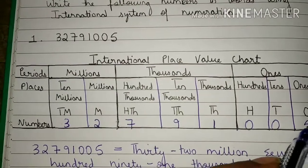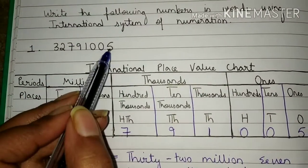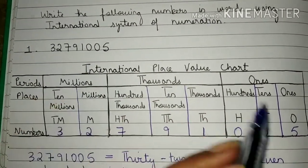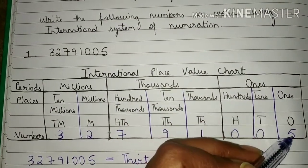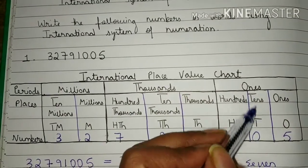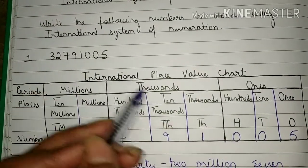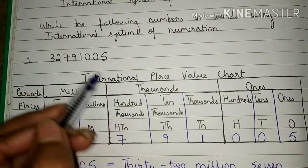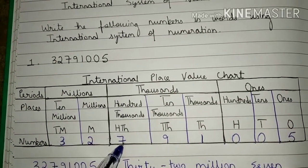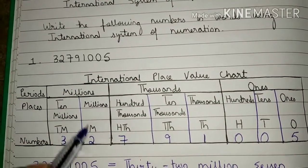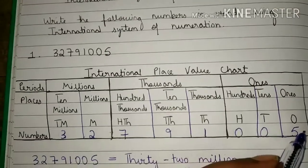Now you will write the number 32,791,005 into the international place value chart. Five is in ones place. Zero is in tens place. Zero is in hundreds place. One is in thousands place. Nine is in ten thousands place. Seven is in hundred thousands place. Two is in millions place. Three is in ten millions place.